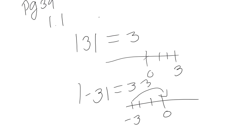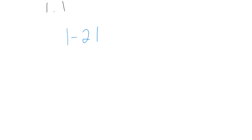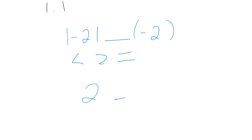If you were asked to compare two numbers — say, which was greater — you could do that from this lesson. For example, comparing the absolute value of negative two versus negative two. We know the absolute value of negative two is positive two. So now we have positive two and negative two. Positive two is greater than negative two — so that would be our answer.